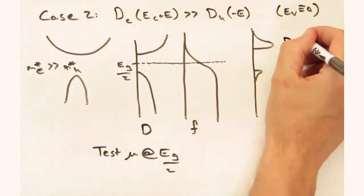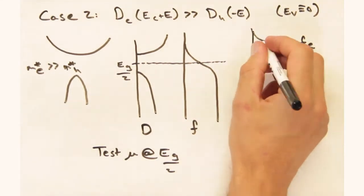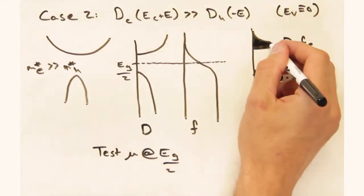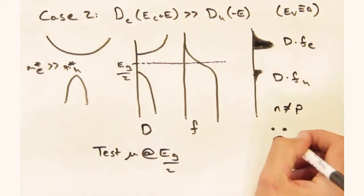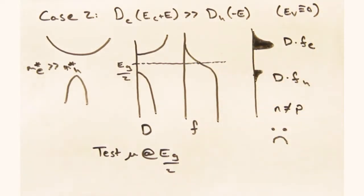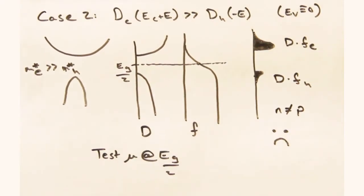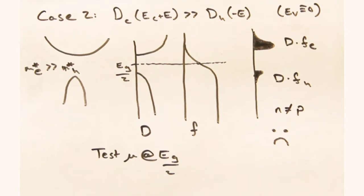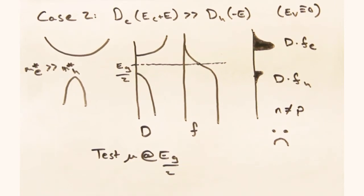In the conduction band, we'd multiply this part of f times d and get this large blob. And in the valence band, we'd multiply this part of the Fermi Dirac distribution times d because fh is 1 minus fe. This blob's quite a bit smaller, and that doesn't seem right. Should the area under each curve be equal if it's an intrinsic semiconductor?